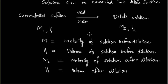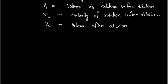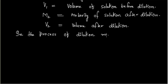Now in the process of dilution, what is the thing that will remain constant? That is the moles of solute. Initially the solution has N moles of solute, and finally it will also have N moles of solute. This is very logical because we cannot destroy the solute. So in the process of dilution, moles of solute remain the same.